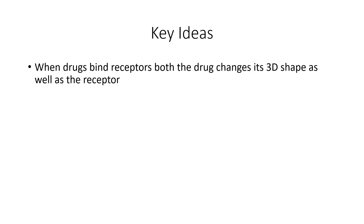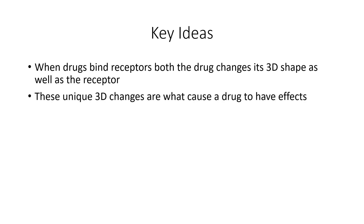I know this video was a bit in-depth and went into the nitty-gritty of how drugs bind to receptors, but here are the key takeaways: when drugs bind receptors, both the drug and the receptor change their three-dimensional shape, and these unique three-dimensional changes are what cause a drug to have effects. In a later video, this will connect to what's called cellular signaling pathways. Hope you enjoyed.